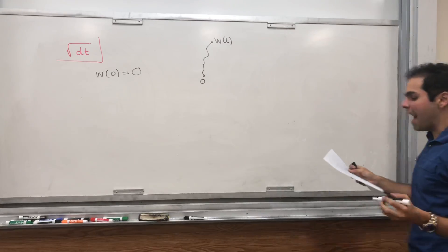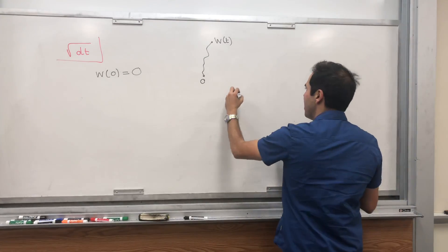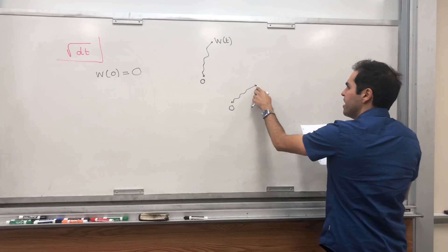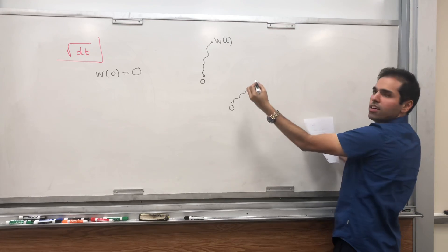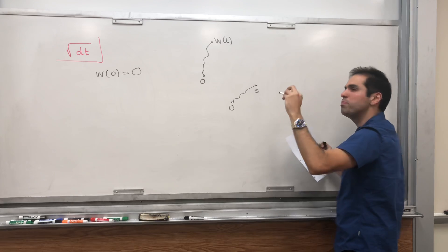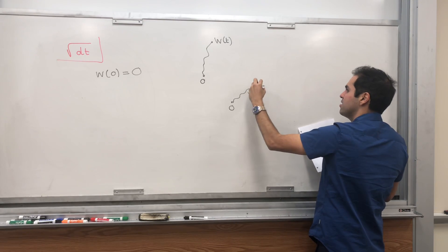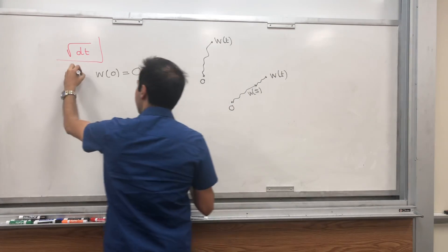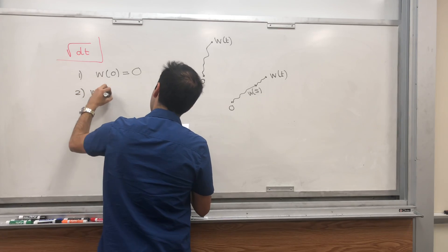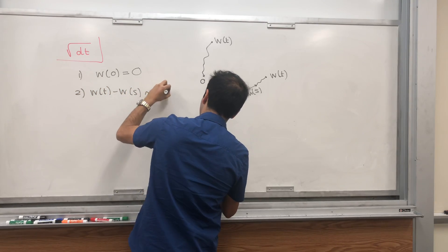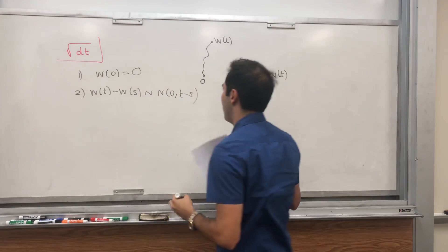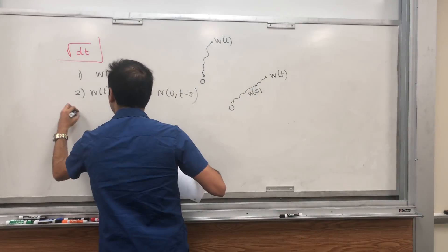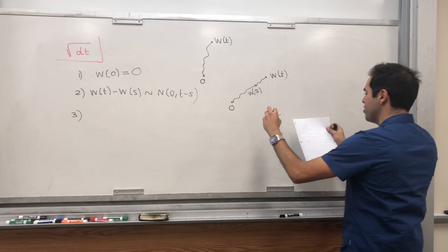But what all those paths have in common is basically, if you go from zero to s and then you start from s and go to t, well if t is very close to s then the Brownian motion should be very close to W_s. So W_t minus W_s should be normally distributed — follows a normal law with mean zero and variance t minus s. And lastly, we assume that increments are independent.